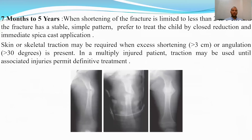For the age group 7 months to 5 years, we consider the amount of shortening and angulation at the fracture site. If shortening is less than 3 cm and angulation less than 30 degrees, we can proceed with immediate hip spica casting. If shortening exceeds 3 cm or angulation exceeds 30 degrees, we first apply traction — either skin or skeletal — followed by definitive treatment in hip spica.